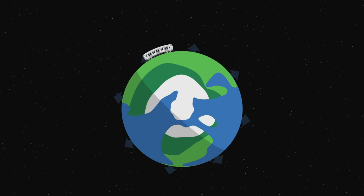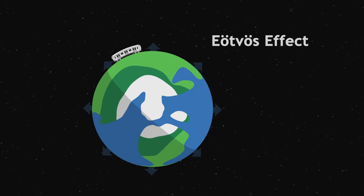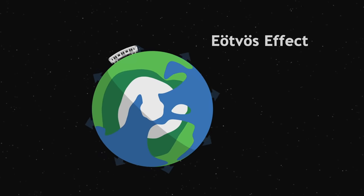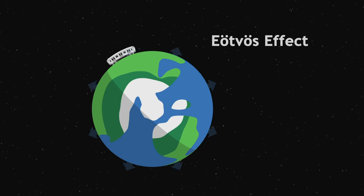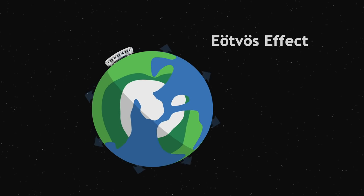This strange phenomenon is called the Eötvös effect. It is a special case of the Coriolis effect, which shows us that the weight of objects on Earth depends on how they move.